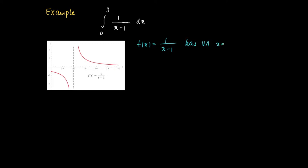And it's in the middle of 0, 3. So if we reconsider the integral from 0 to 3 of the function 1 over x minus 1, then what it means is that this should be, in fact, the sum of two other integrals.